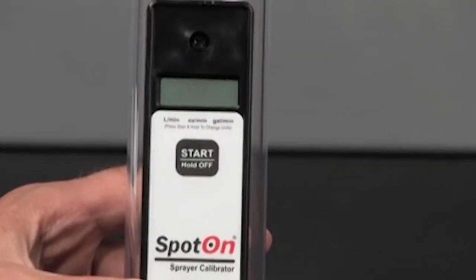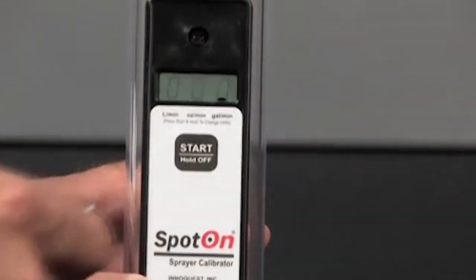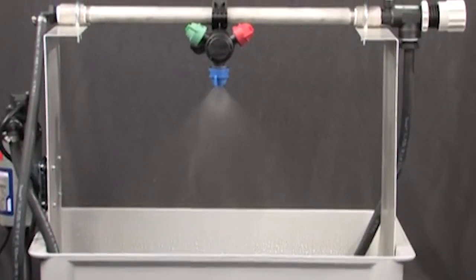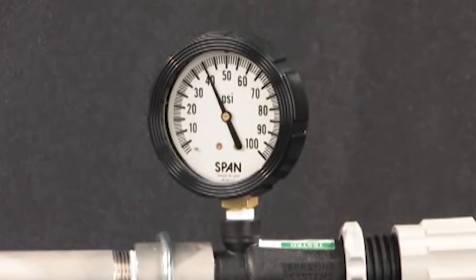Measurements can be made in gallons, ounces, or liters per minute. The selected unit of measure is displayed as the meter is turned on. Our demo is with a number three nozzle running at 40 PSI and features the model SC-1 with plus and minus 2.5 percent accuracy.